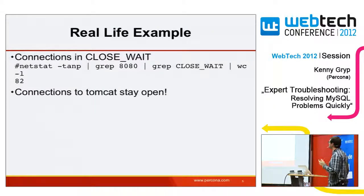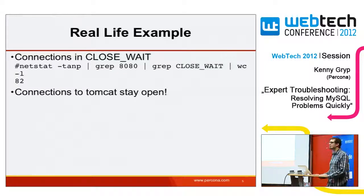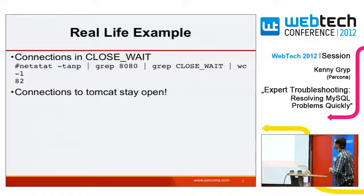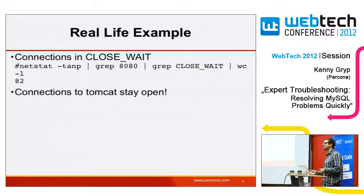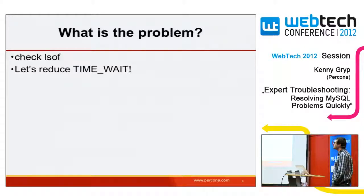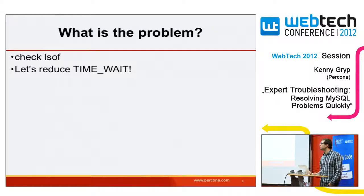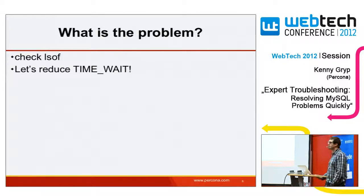It's a conversation I had with a good friend on IRC who manages some Tomcat servers. He said 'connections to Tomcat stay open' — that was his problem. Apparently he posted on IRC: 'I have a lot of connections in close-wait, about 82.' His solution immediately was to reduce time-wait. Changing the time-wait timeout via a Linux kernel setting is not going to resolve close-wait, so I asked him: why are you doing this?